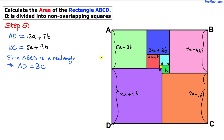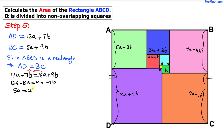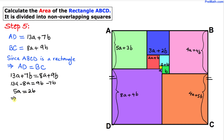We know that ABCD is a rectangle, so the opposite sides have equal length. So we equate them: 13a plus 7b equals 8a plus 9b. Moving 8a to the left and 7b to the right gives 13a minus 8a equals 9b minus 7b, so 5a equals 2b.